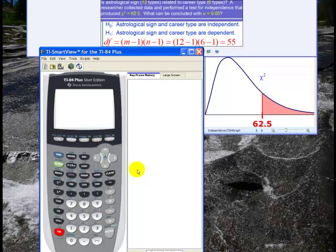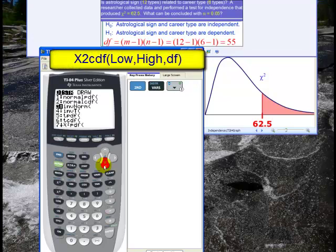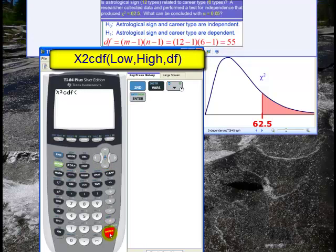So here's the calculator and to find a p-value if we know what chi-squared is we're actually going to go to the second distribution and then chi-squared CDF. That's the chi-squared cumulative distribution function. That's number eight and the syntax for that is I put the lower bound comma the upper bound comma the degrees of freedom.